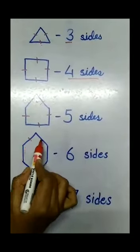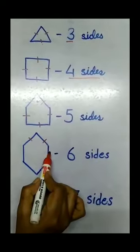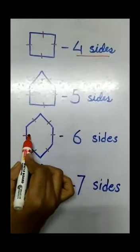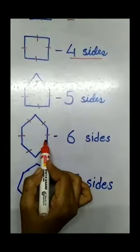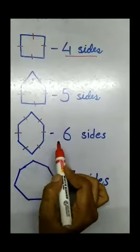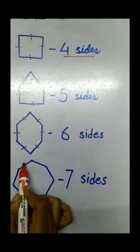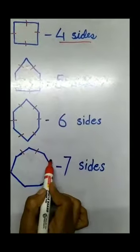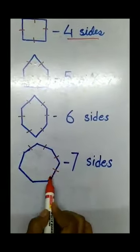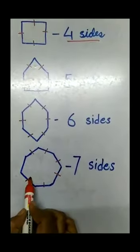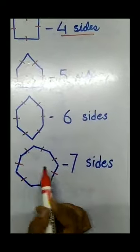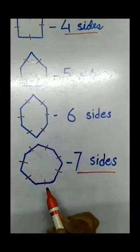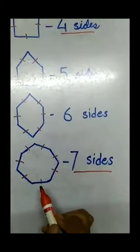1, 2, 3, 4, 5, 6 — six sides. This shape is called hexagon. Then, 1, 2, 3, 4, 5, 6, and 7 — seven sides. This shape is called heptagon.